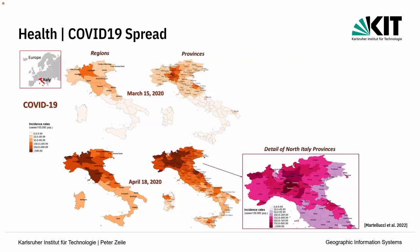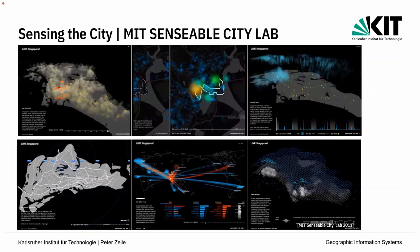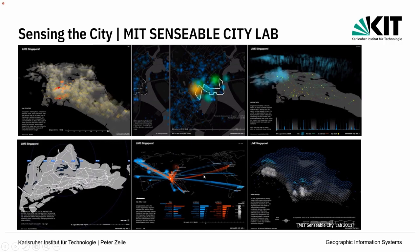Im Bereich Gesundheit können wir nicht nur die räumliche Verteilung von Krankheitsfällen über einen räumlichen und zeitlichen Bezug darstellen, sondern das auch im städtischen Kontext visualisieren. Und die Königsdisziplin ist, was das Sensible City Lab macht: Sensorik-Daten in der Stadt visualisieren – Stromverbrauch, Regenmengen, Taxiverfügbarkeit. Wir haben Warenströme nach Singapur visualisiert. Man kann so ein Dashboard aufbauen, um mehr Informationen über seine Stadt zu bekommen.